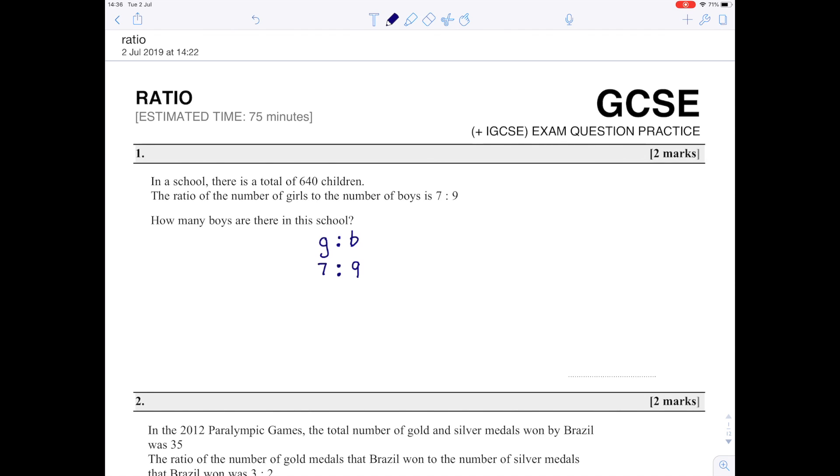If you add those 7 parts and 9 parts together you get 16 parts. We know there's 640 children all together, so 640 divided by 16 gives us 40 children in each part. The number of boys is 9 times 40, which equals 360 boys.